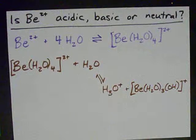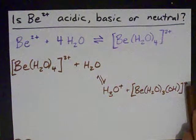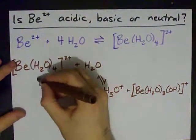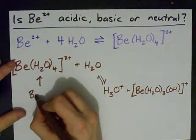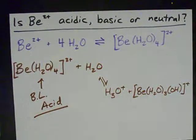There's only a single +1 charge left because it was 2+, but it gave away an H+, so you're down to 1+. In any case, what's super important about this is that this is now acting as a Bronsted-Lowry acid.